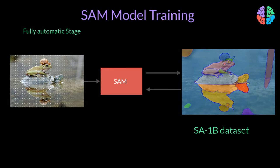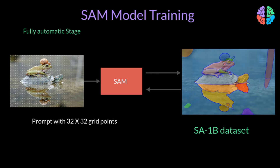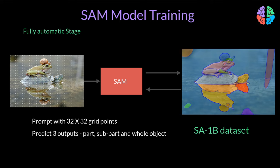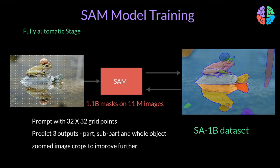The last fully automated stage introduced prompting at the input with 32 by 32 regular grids, and the output at this stage would be part, subpart, and whole object. To further refine the quality, they introduced zoomed-in image crops. At the end of this stage, they had 1.1 billion masks on 11 million images, leading to the SA-1B dataset.